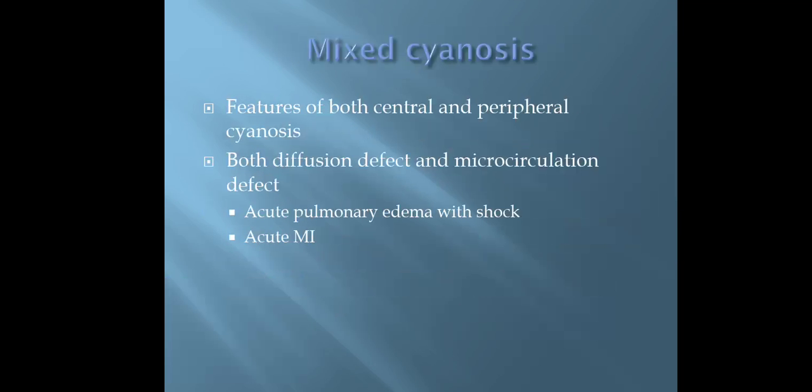The next is mixed cyanosis. There will be features of both central and peripheral cyanosis, and both diffusion defect and microcirculation defect will be present. For example, acute pulmonary edema with shock, and acute myocardial infarction.